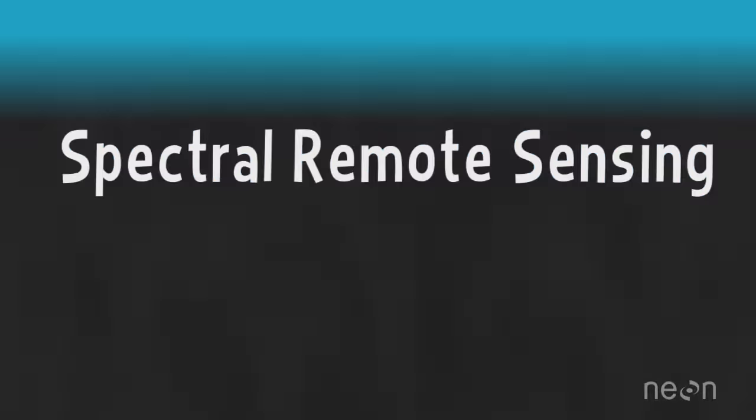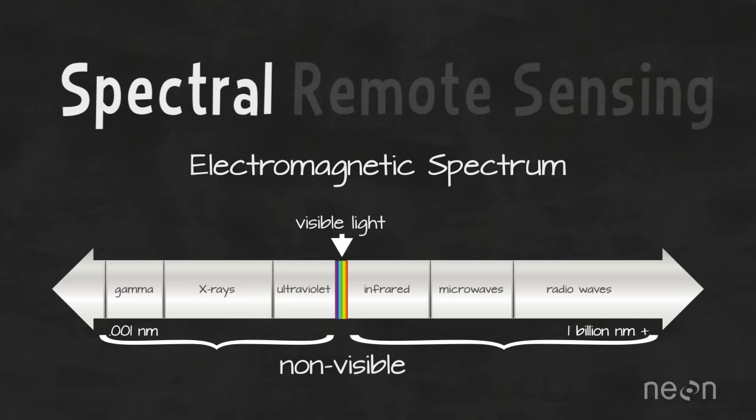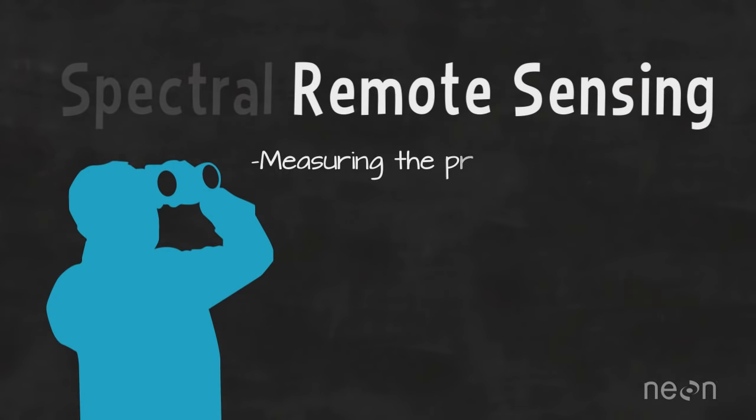If you've ever used a camera, then you know something about spectral remote sensing. Spectral relates to the electromagnetic spectrum, which includes light that is both visible and invisible to human eyes. And remote sensing involves measuring the properties of objects without directly touching them.